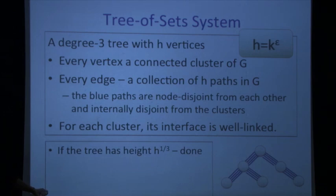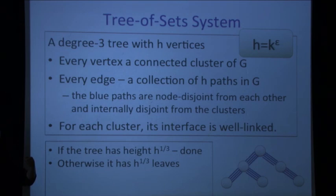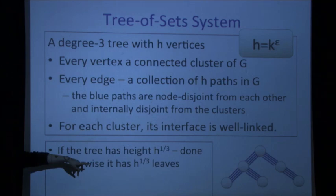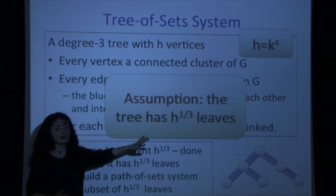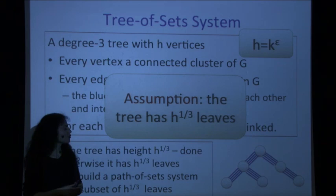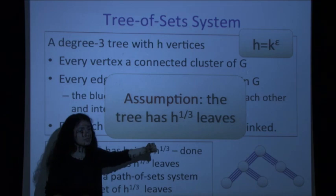If the height is less than h^{1/3}, then the tree must have many leaves, because every vertex lies on some root-to-leaf path. Specifically, the number of leaves is going to be h^{2/3}, but since we only want a path-of-set system of size h^{1/3}, we'll work with h^{1/3} leaves. For simplicity, assume the tree has exactly h^{1/3} leaves (throwing extras out). There is a separation between the number of leaves h^{1/3} and the number of paths in every bundle h — we'll see why we need this.